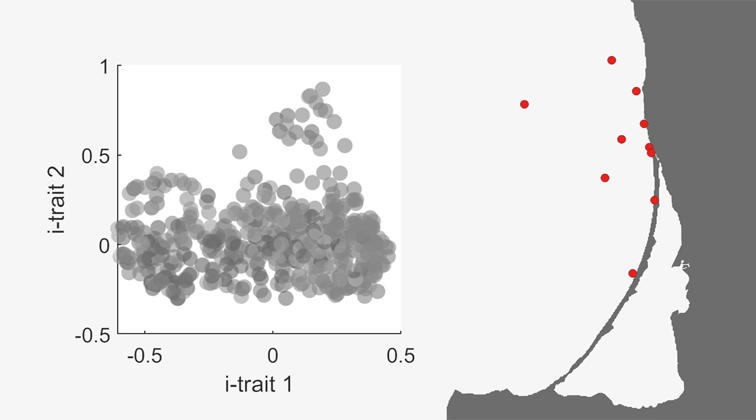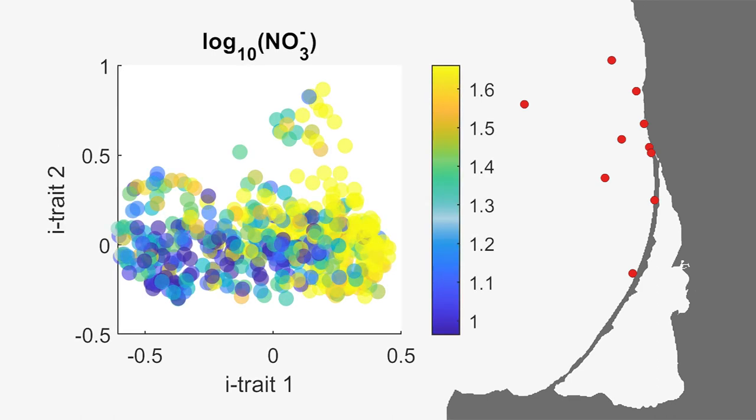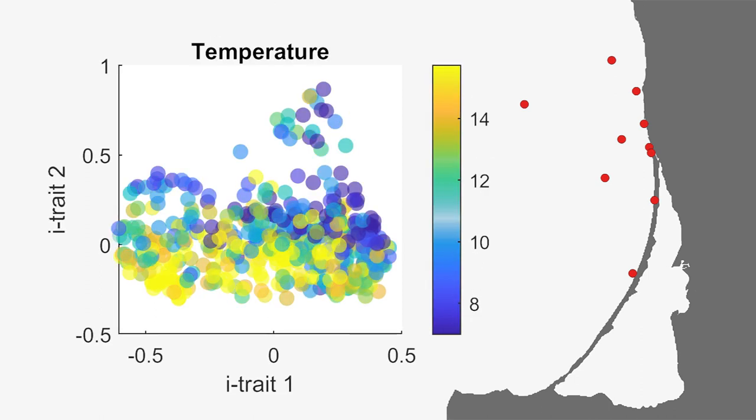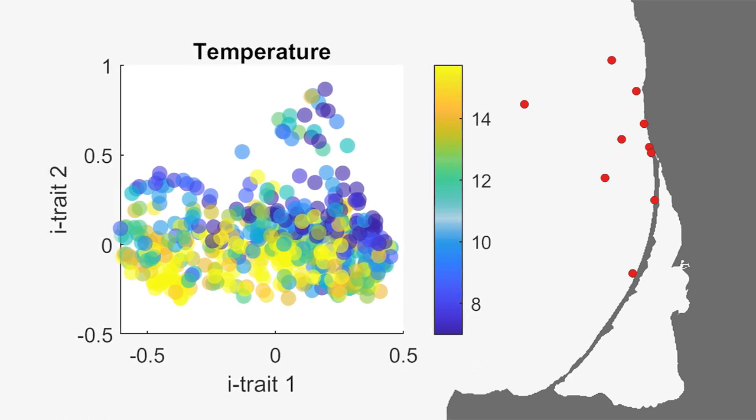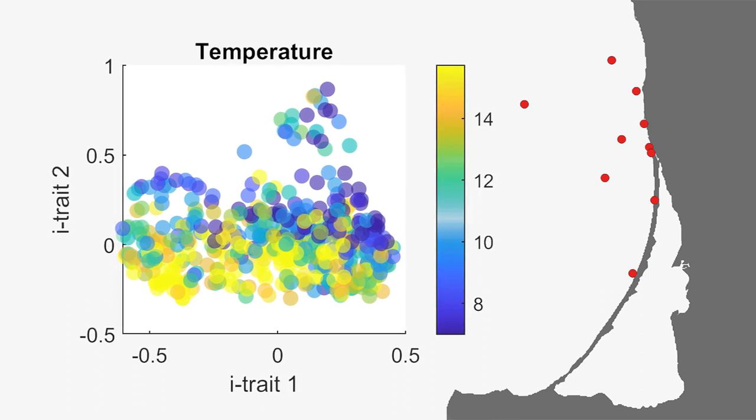For example, if we color code nitrogen content, we can see that species that score high on the first axis of our reconstructed trade space typically come from nitrogen-rich water. So maybe these species are adapted to high nutrient levels, or at least to some factors that correlate with high nutrient levels, such as proximity to the coast. If we color code water temperature, we can see that species that score high on our second reconstructed trade axis typically come from colder water. So maybe these species are adapted to colder water, or maybe they are just the early species who reached their peak already in spring.